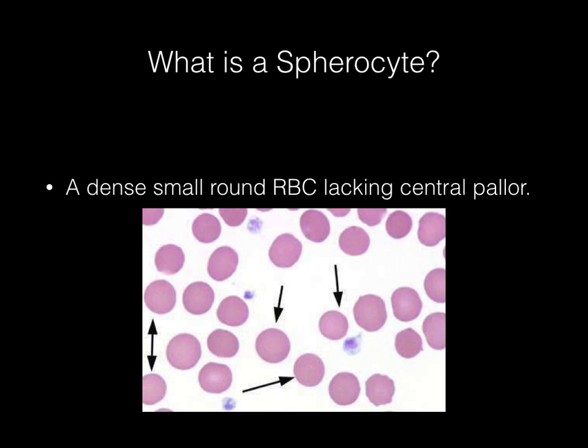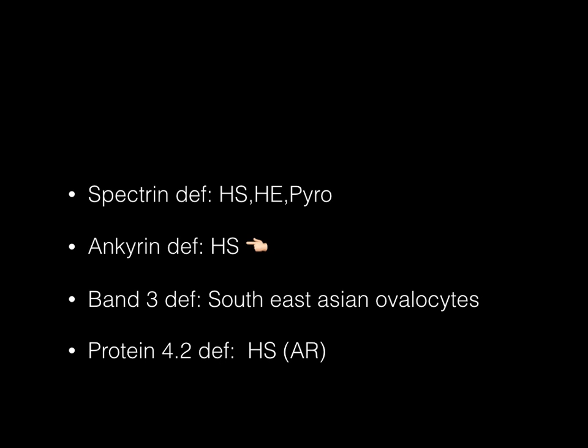The abnormal proteins deficient in the membrane — which render the red cell spheroid, less deformable, and vulnerable to splenic destruction — are spectrin deficiency, ankyrin, band 3, and protein 4.2. Of these, the commonest cause of hereditary spherocytosis is ankyrin deficiency.